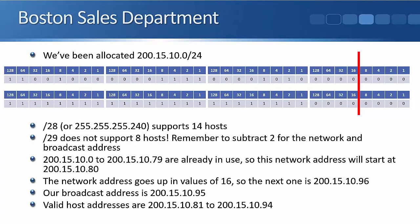We need to support seven hosts. A common mistake here is to use a /29: people think 2, 4, 8 — that's three bits — and make it a /29, forgetting to subtract two for the network and broadcast addresses. A /29 supports 8 minus 2 = 6 hosts, which isn't enough for seven. So we use a /28 again, which supports 14 hosts. The last broadcast address was .79, so our network address is 200.15.10.80. The line is after 16, so the next network address is .96, making our broadcast address 200.15.10.95. Valid host addresses are .81 to .94.